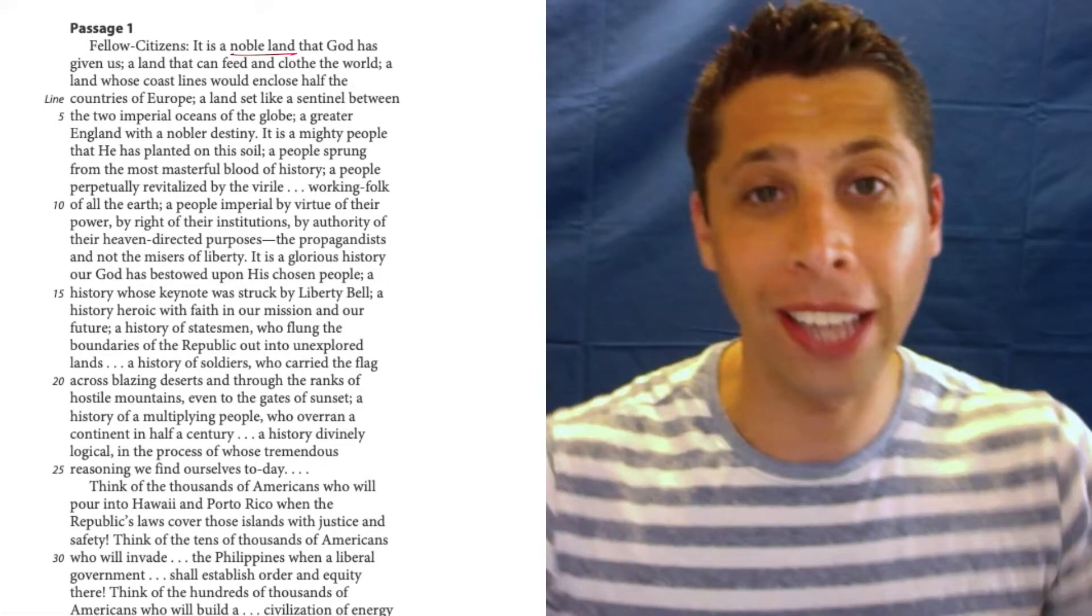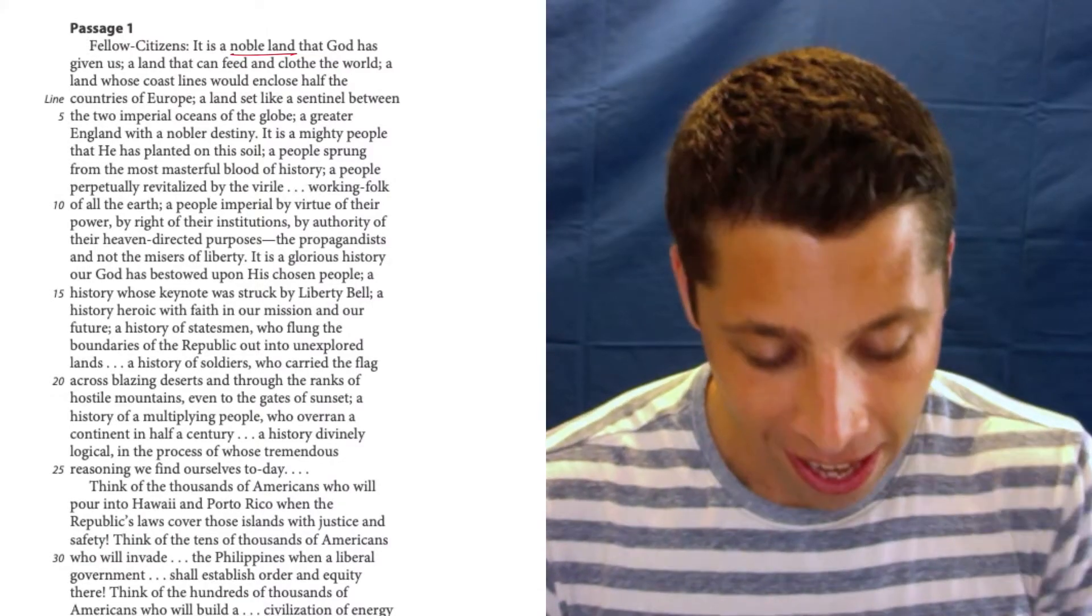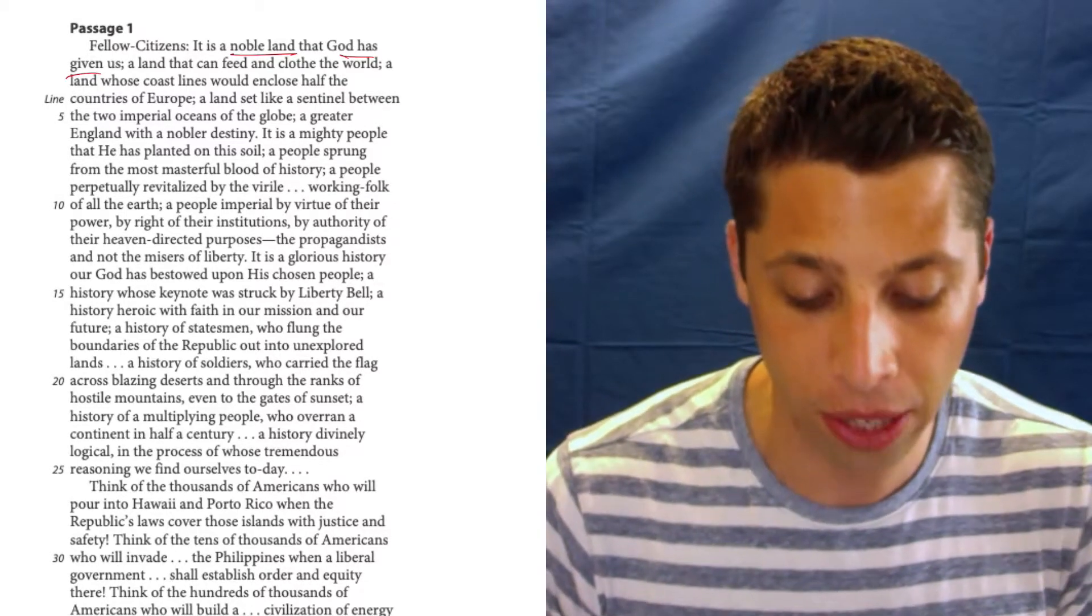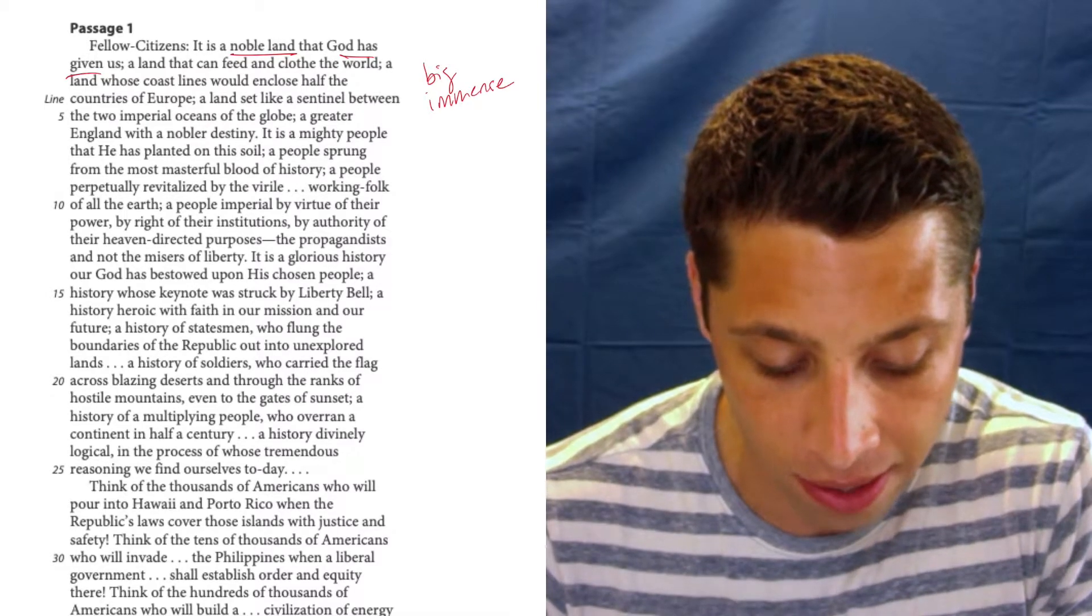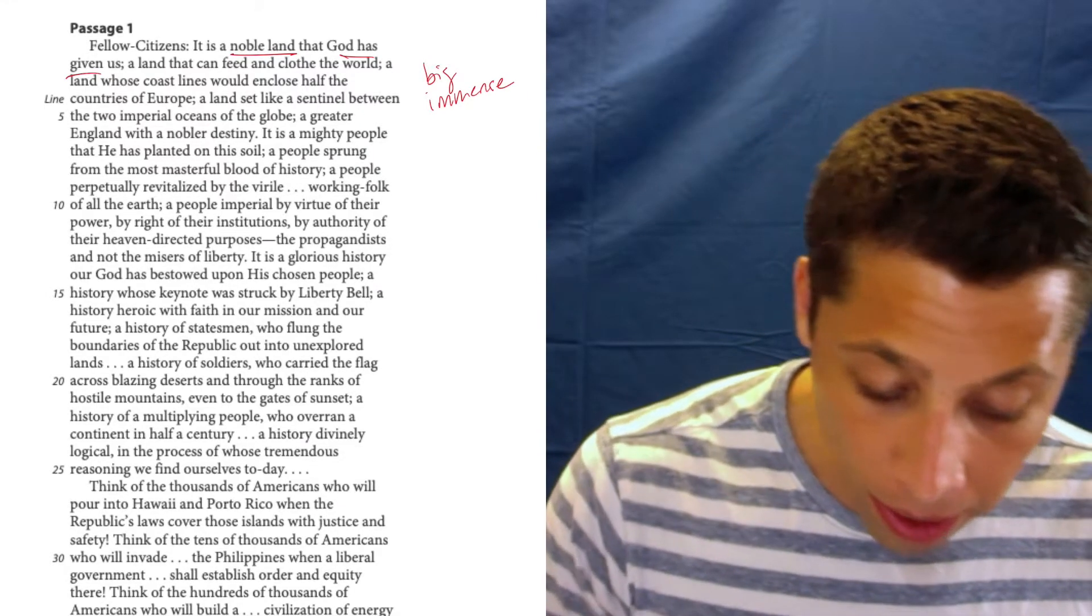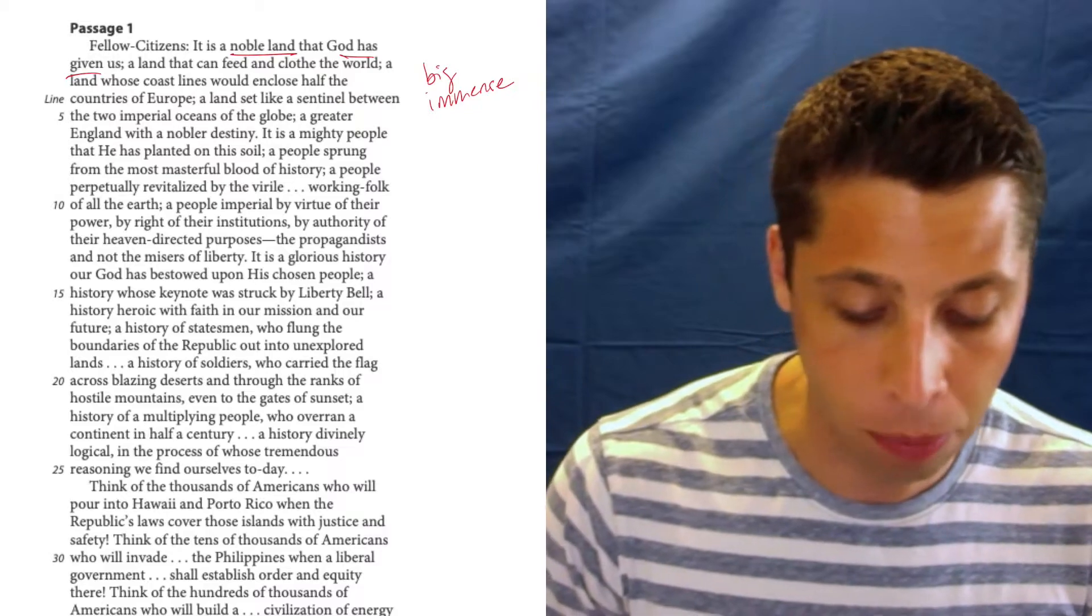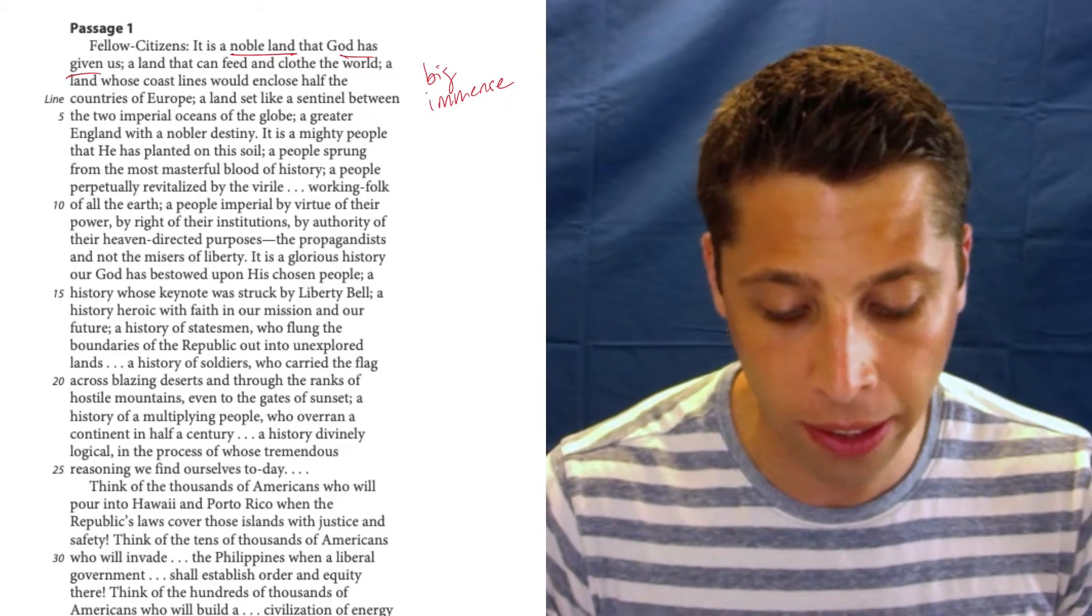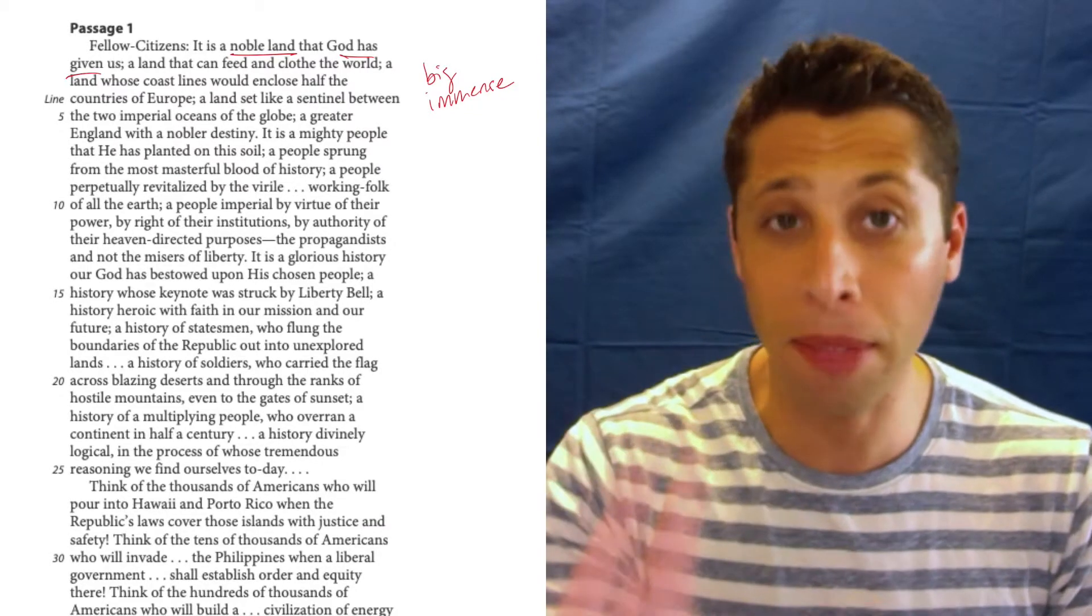And it says, it is a noble land. Well, that sounds like we're now talking about the United States that God has given us—a land that can feed and clothe the world, a land whose coastlines would enclose half the countries of Europe. So it's big. It's immense, as the question says. A land set like a sentinel between the two imperial oceans of the globe, a greater England with a nobler destiny. Okay, let's just stop there.